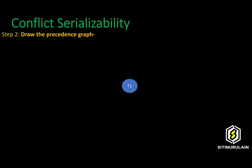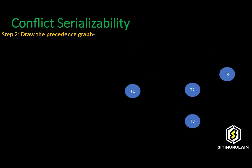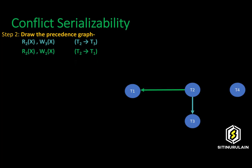In the second step, we need to draw the precedence graph. There are four transactions involved in Schedule S: transaction 1, transaction 2, transaction 3, and transaction 4. In the first operation, we need to create an edge between transaction 2 and transaction 3. In the second operation, we need to create an edge between transaction 2 and transaction 1.